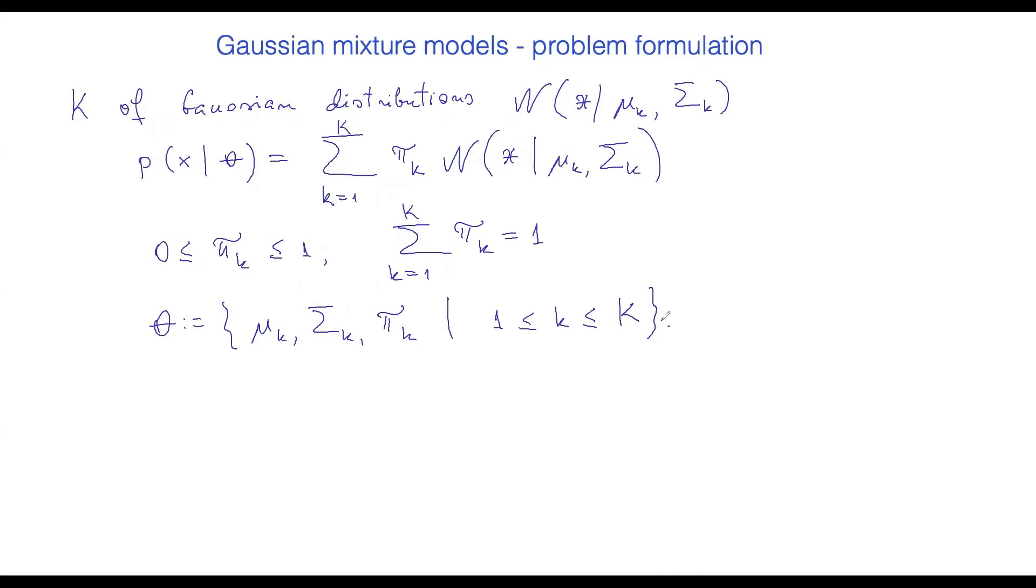So this is the formulation of the model. We have these distributions and we take the sum. And what we would like to do is we would like to learn the parameters in such a way that our model explains the data in the best possible way. And this is going to be done at least now to start with in terms of the maximum likelihood.